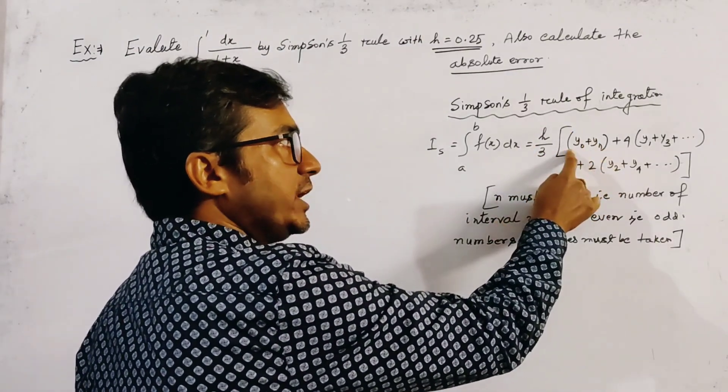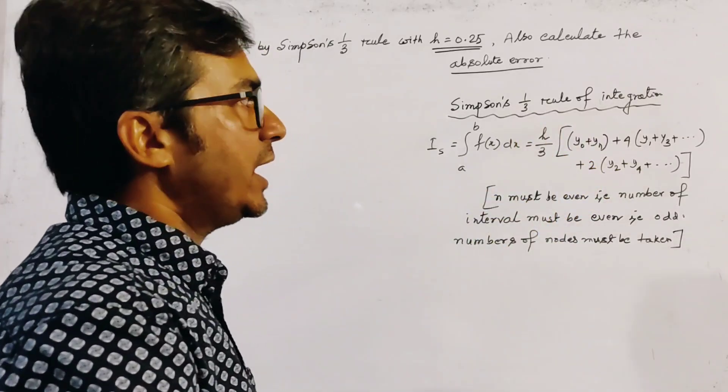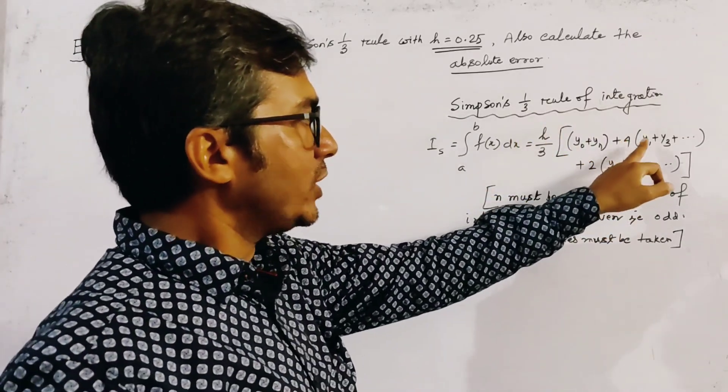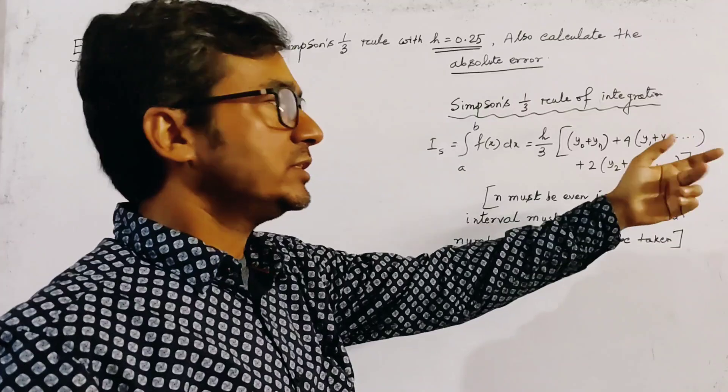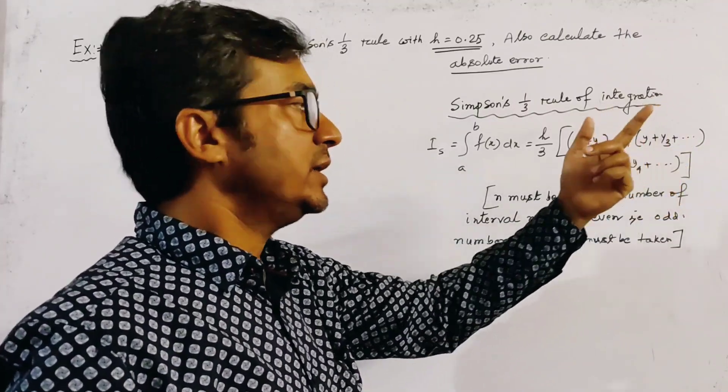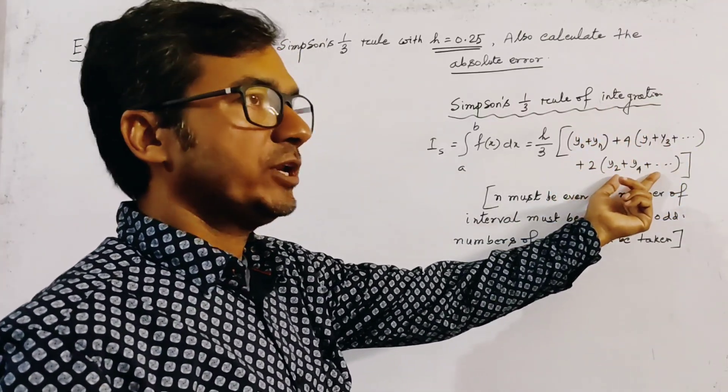...y₀ plus yₘ (this is the first ordinate, this is the last ordinate) plus 4 times (y₁ plus y₃ plus y₅ and so on—this is the odd number of ordinate) and 2 times the even number of ordinate.